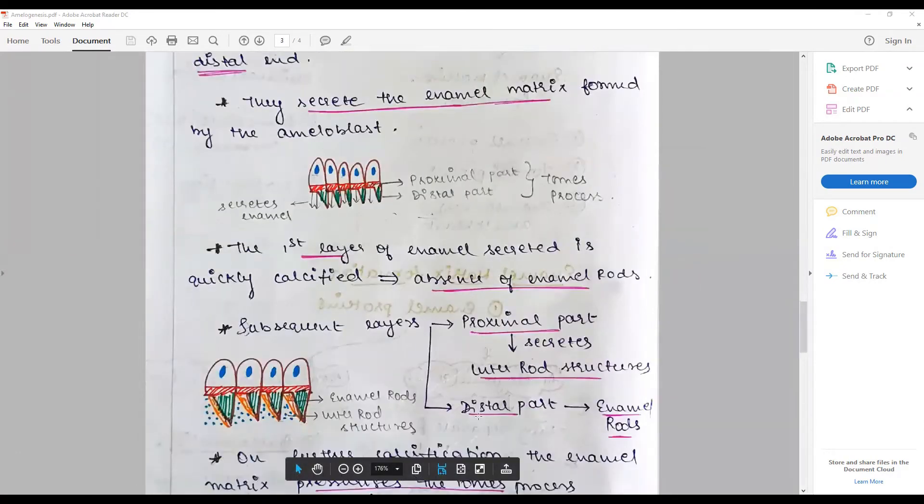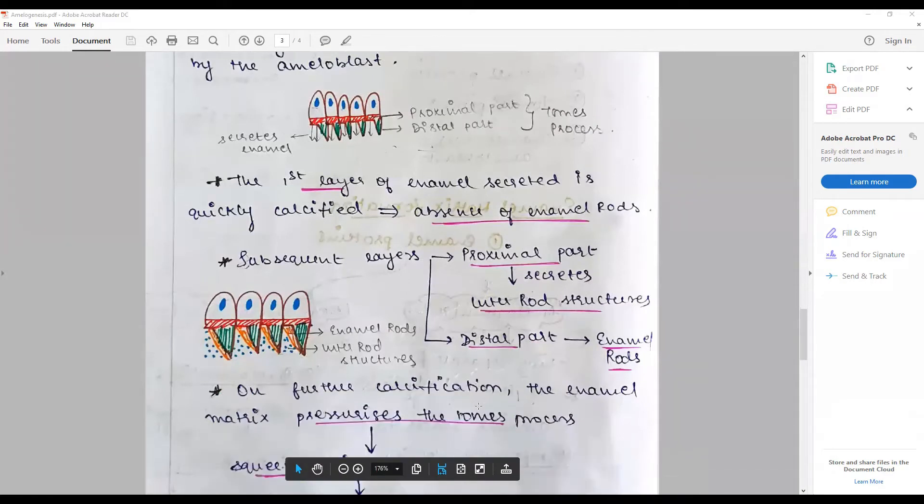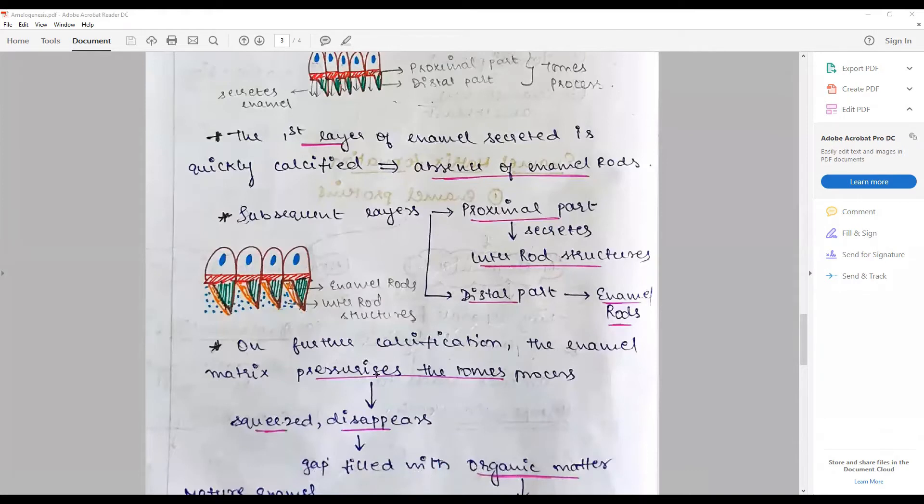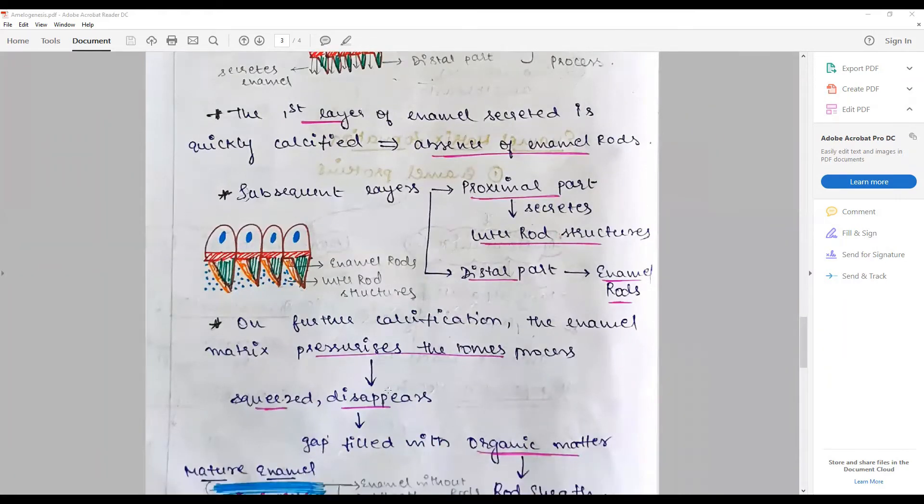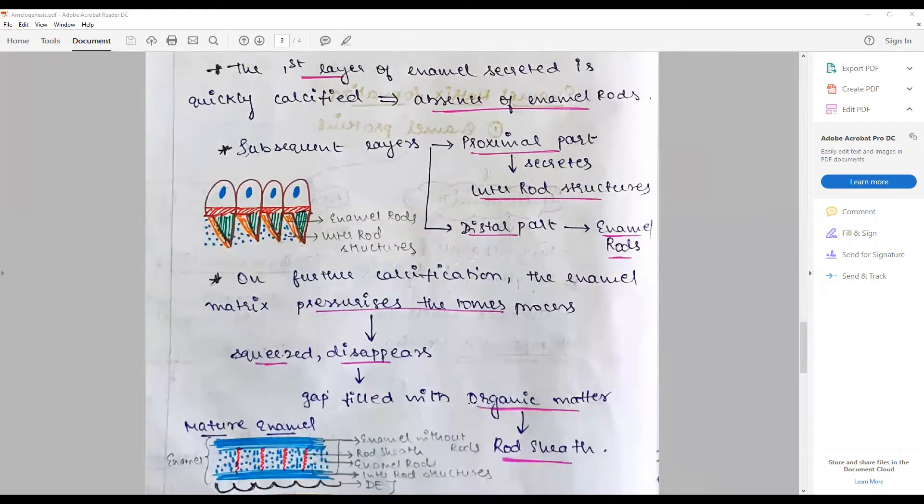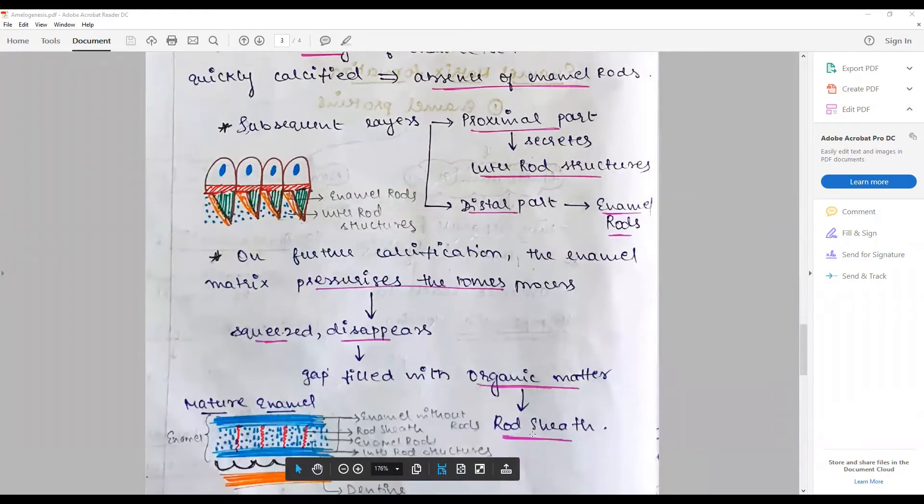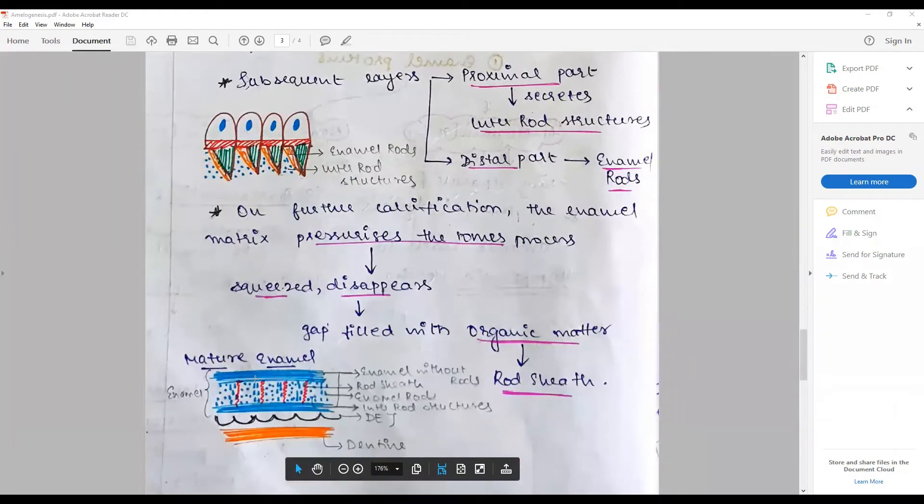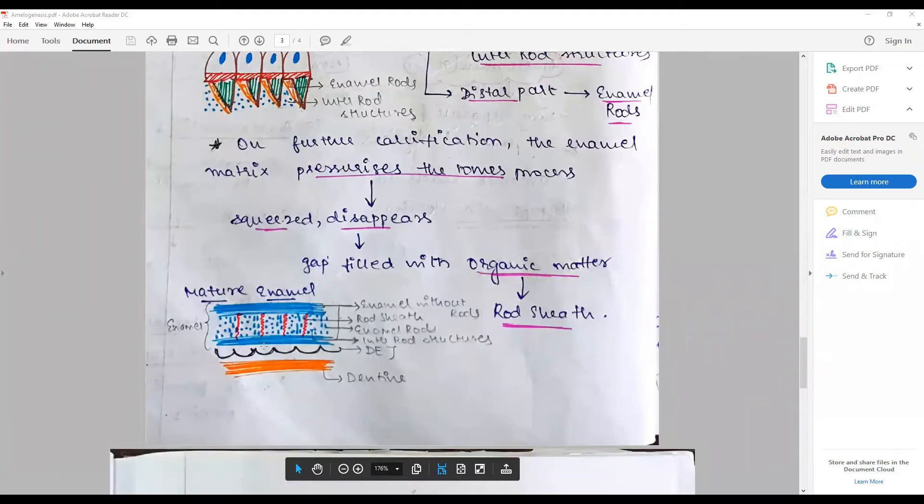Subsequently, the proximal part properly starts to secrete enamel, and further calcification pressurizes the Tomes process to secrete properly and fill with organic matter, contributing to the formation of rod sheath. This is how the mature enamel looks like. You need an informatic infographic diagram.